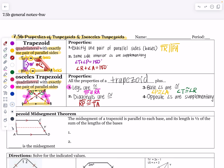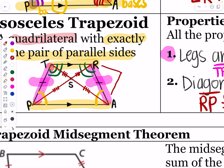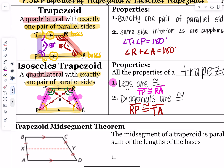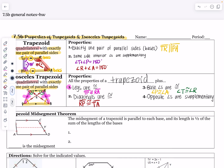Because base angles are congruent, a green plus a yellow adds up to 180 — those are same-side interior angles. We also know that opposite angles are supplementary in an isosceles trapezoid. So angle R plus angle P equals 180, and angle T plus angle A also equals 180 degrees. That is a property of being an isosceles trapezoid.